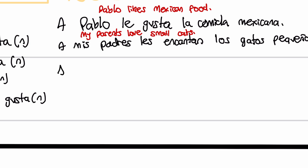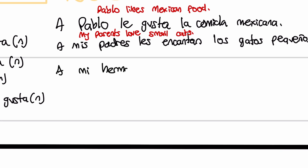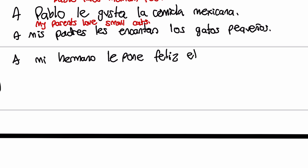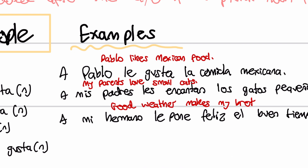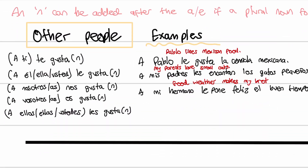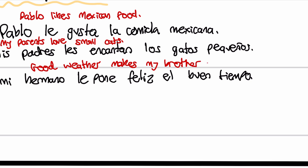Let's keep going. A mi hermano — my brother. Le pone feliz el buen tiempo. Tiempo here is weather. So: good weather makes my brother happy. This is not using gusta or encanta — we're using le pone feliz, which we saw as me pone feliz earlier. The me just changed to le, so it makes my brother happy.